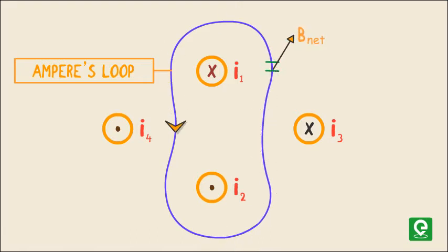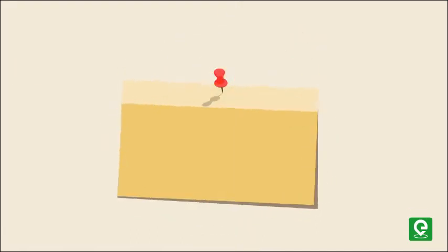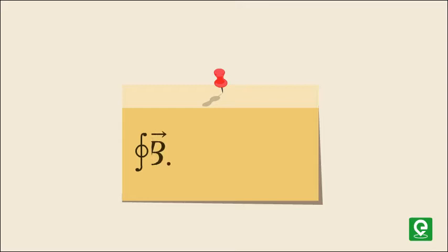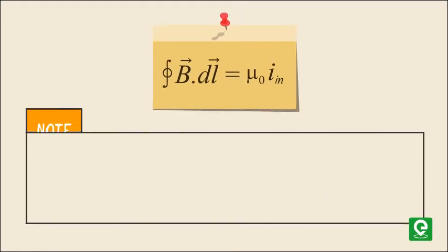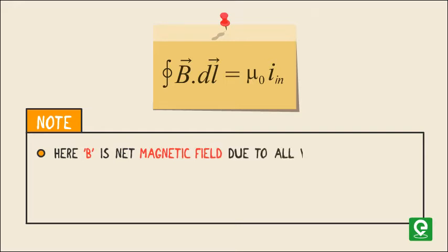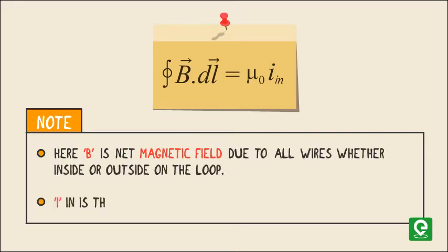Then we can write ∮ B·dl = μ₀I_in. Note that B is the net magnetic field due to all wires, whether inside or outside the loop, and I_in is the current due to wires inside the loop.